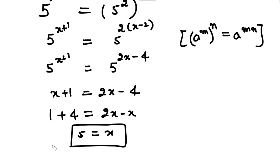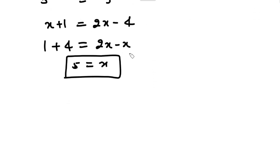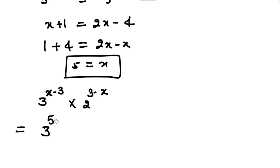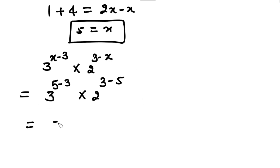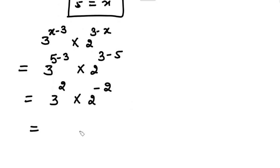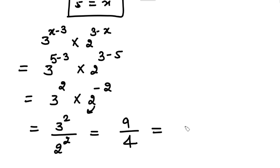Now that we have X equals 5, we find the required result: 3 raised to the power (X minus 3) multiplied by 2 raised to the power (3 minus X). Substituting X equals 5: 3 raised to the power (5 minus 3) multiplied by 2 raised to the power (3 minus 5). This gives 3 raised to the power 2 multiplied by 2 raised to the power minus 2. Moving 2 raised to the power 2 to the denominator makes the power positive: 9 divided by 4 is the required value.